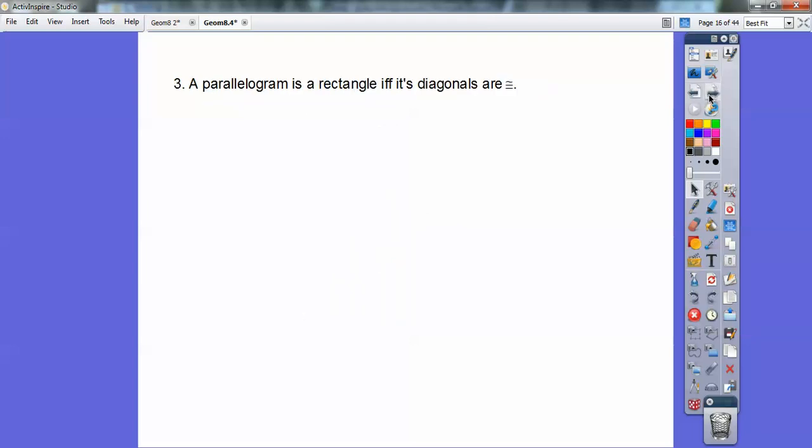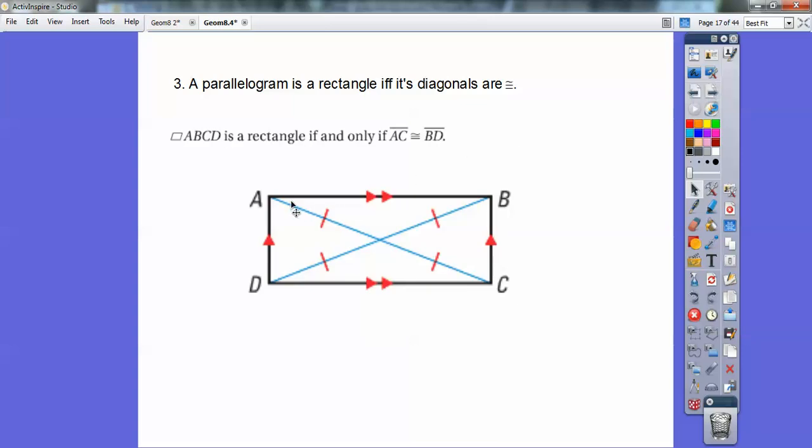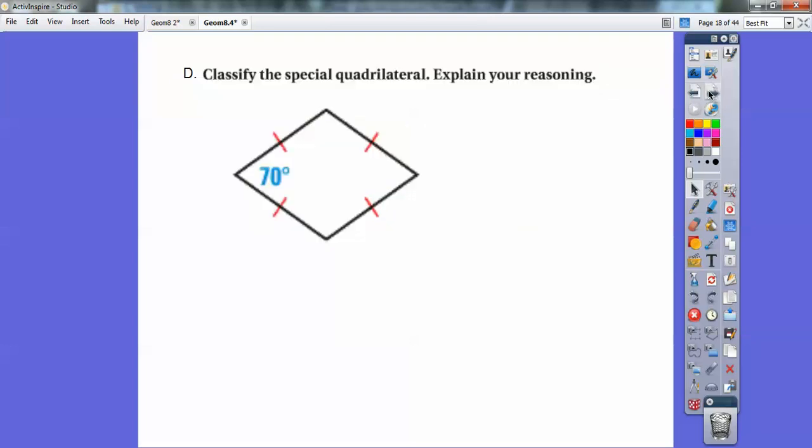Okay, a parallelogram is a rectangle if and only if its diagonals are congruent. So here I have this rectangle if AC is congruent to BD. Okay, then if it's a rectangle then the diagonals congruent.